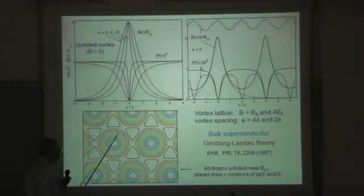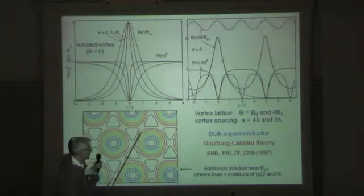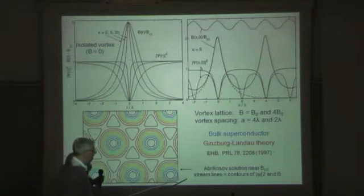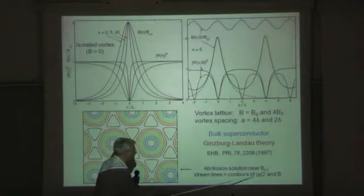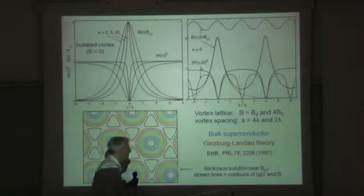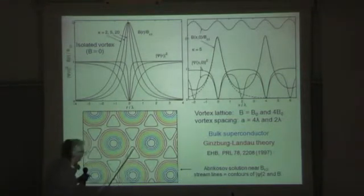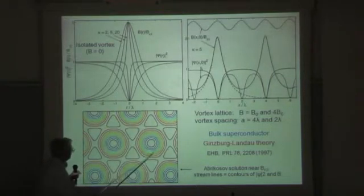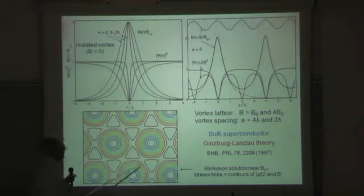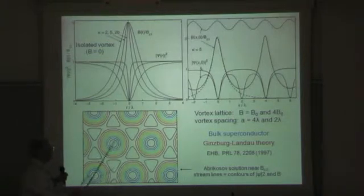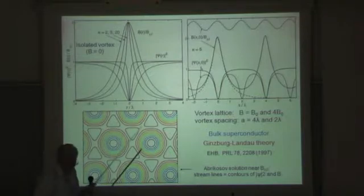These contours can be interpreted in three ways. They are the streamlines of both the order parameter psi squared, and also of the magnetic field. And they are at the same time the streamlines of the current — they give the direction and density of the flowing supercurrent which circles around vortices.